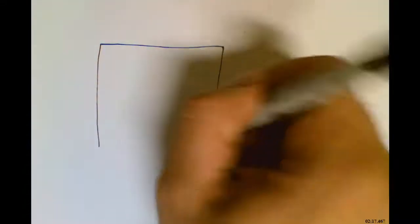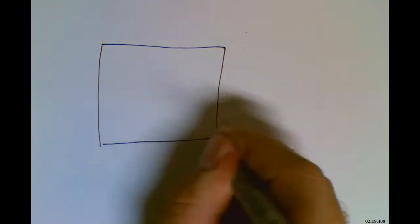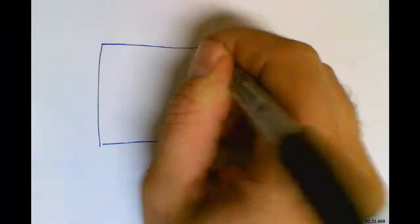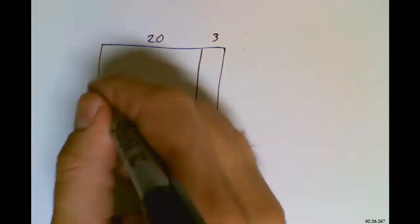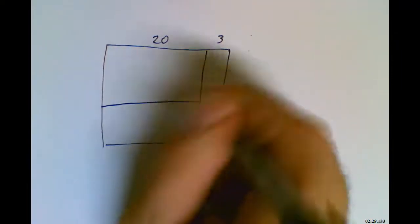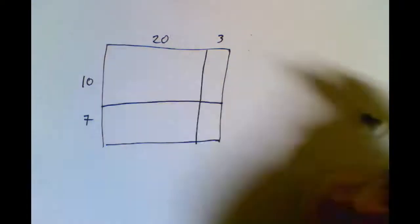One last point to bring up is if I look at the second algorithm and I look at it another way, which is visually, I can take 23 and break it up into 20 and 3. And I can take 17 and break it up into 10 and 7.